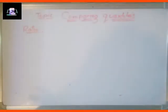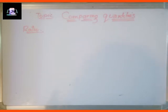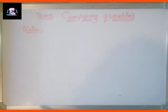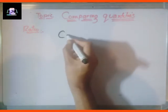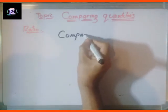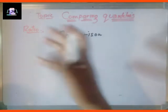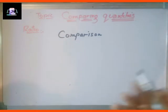Let's talk about comparing quantities. Today's topic is comparing quantities. The first concept is ratio. Ratio is a technique with the help of which we can compare two or more quantities easily. Ratio helps us in comparison — it tells us the value of one thing with respect to another.